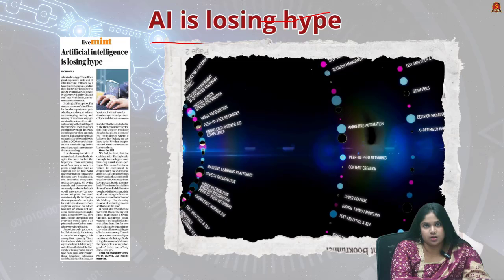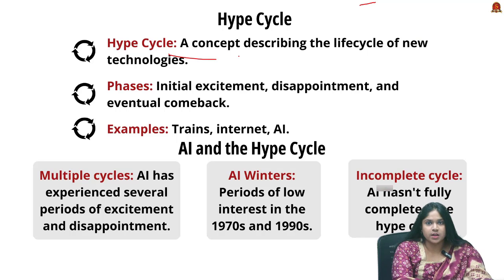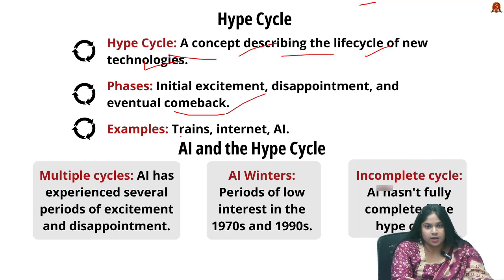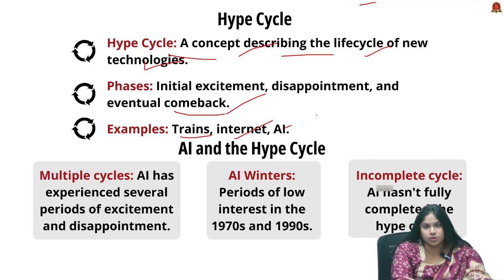The hype cycle is a concept describing the life cycle of new technologies, where they go through phases such as initial excitement and over-investment, a period of disappointment, and finally a gradual comeback as the technology becomes more useful. For example, trains in the 19th century and the internet in the 1990s followed this pattern — both went through a boom, a bust, and then eventual widespread use.